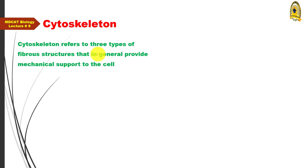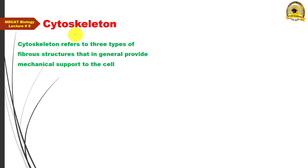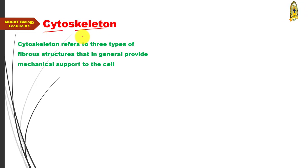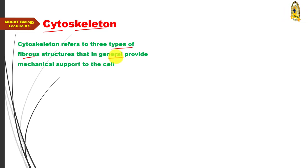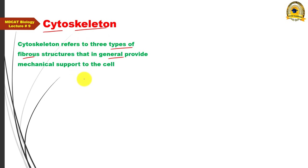Now let us discuss the cytoskeleton. The cytoskeleton usually refers to three types of fibrous structures that in general provide mechanical support to the cell. This is why they are collectively called cytoskeleton — meaning 'skeleton of the cell.' All three provide mechanical support, but each has additional roles that we will explore one by one.